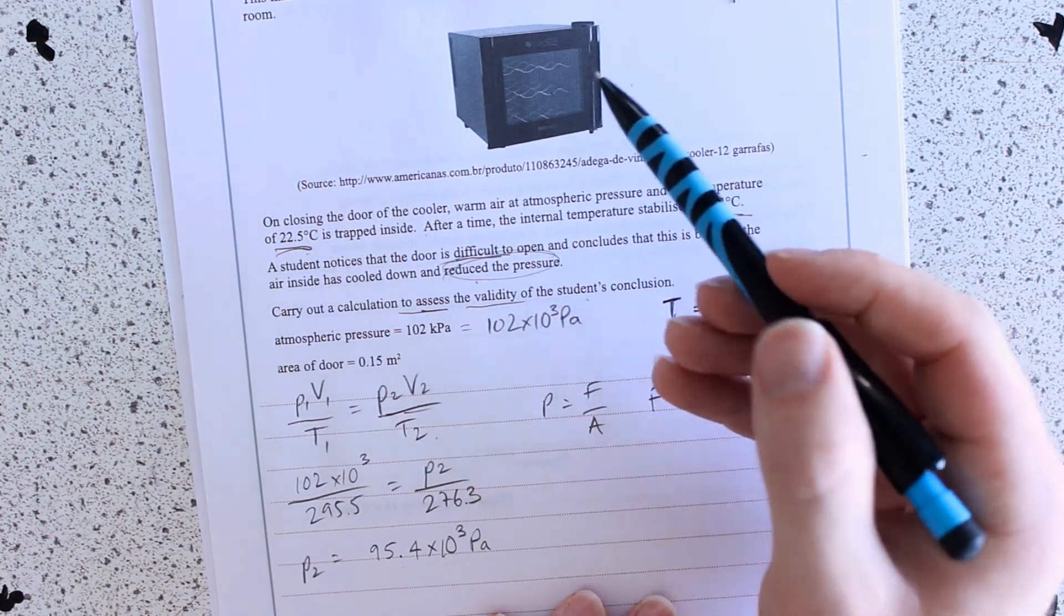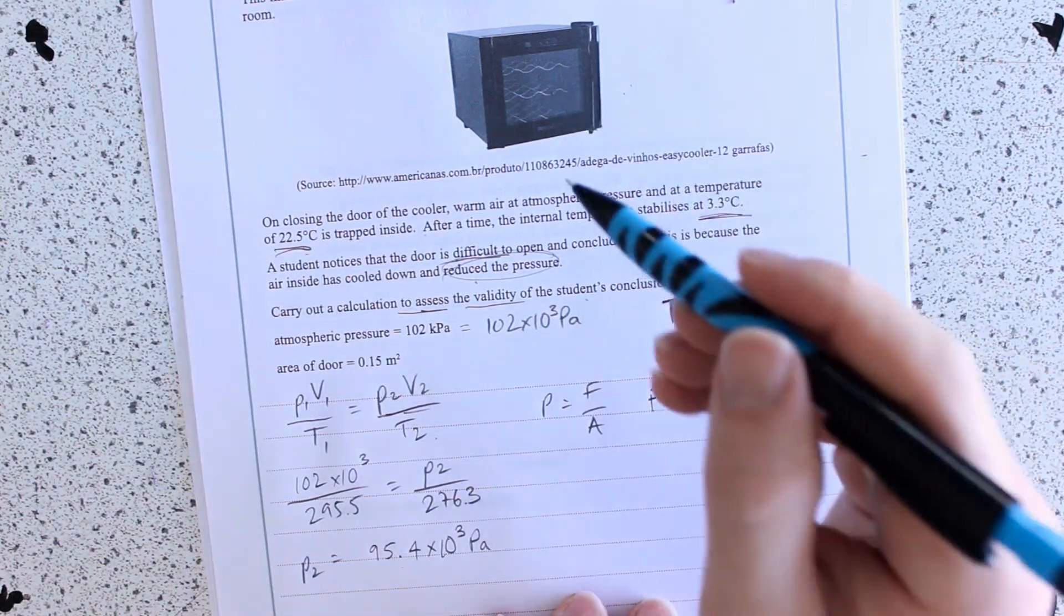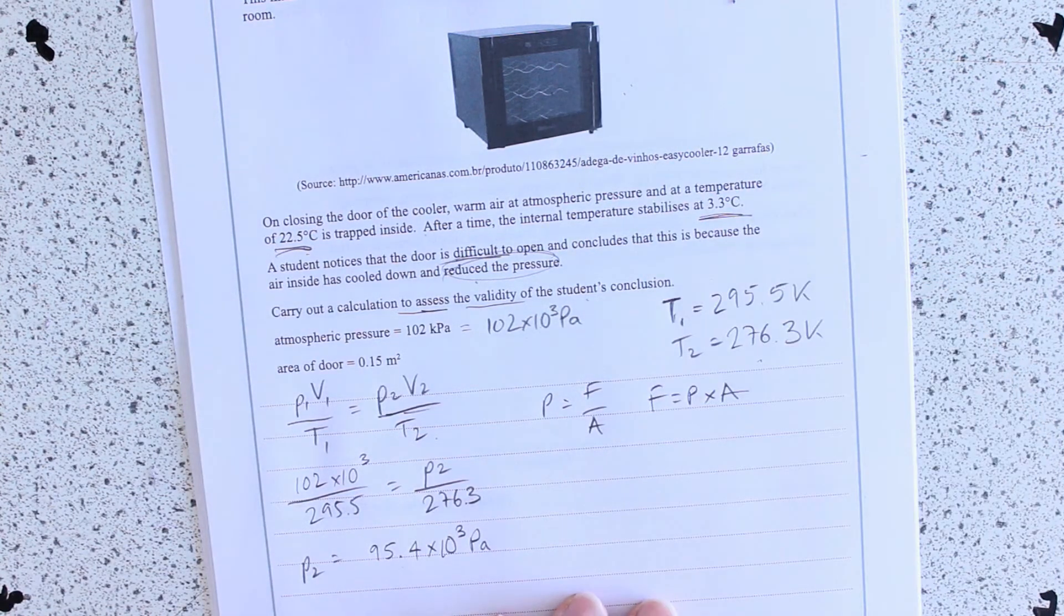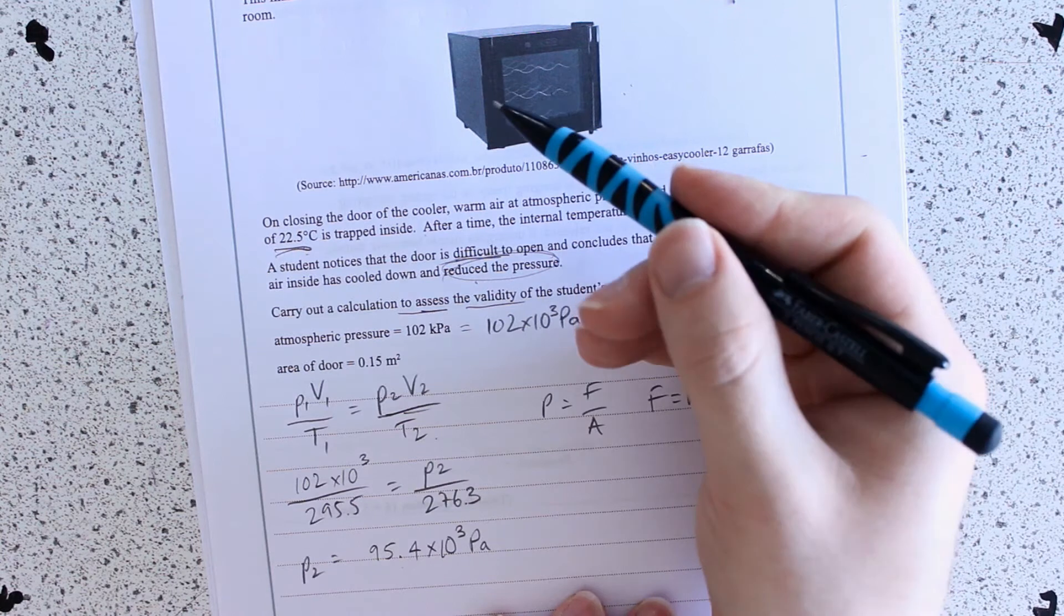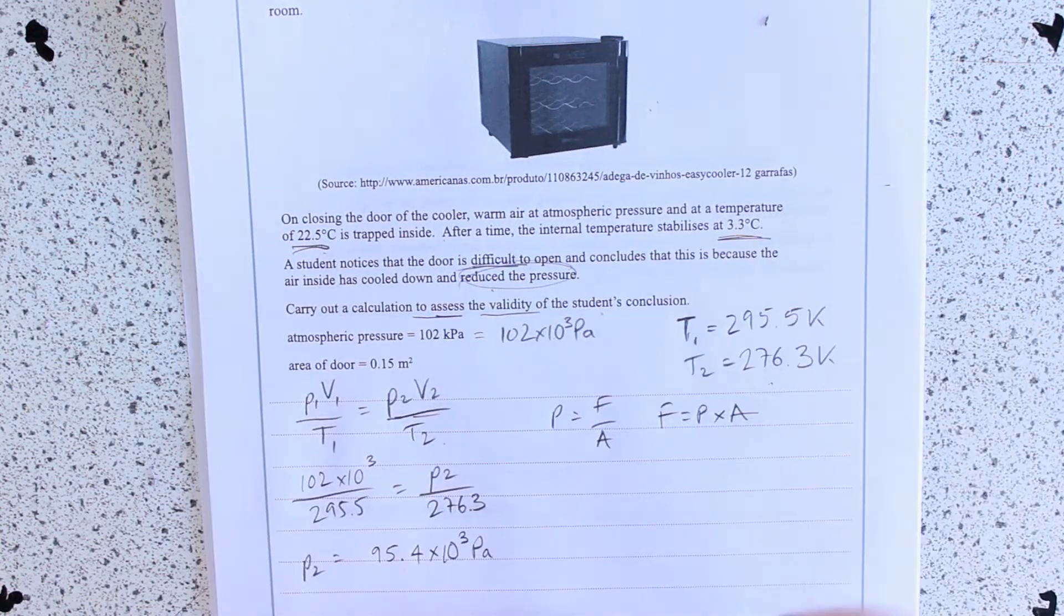But because we've got it, we're talking about a pressure difference, we're not going to use the absolute pressure inside. We're going to say it's harder to open because there's an extra force outside from inside. Essentially, there's now a bit of an unbalanced force going on and we have to overcome that as well when we're opening the drinks cooler.